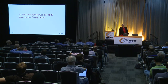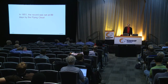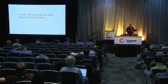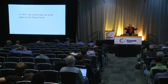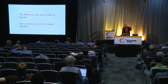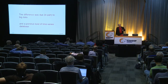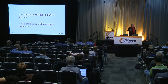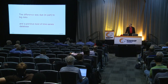In 1850, the record was set at 89 and a half days by the ship called the Flying Cloud — from 130 days to 89 and a half in just a few years. Ship technology had not changed. The way they made rope, sails, or pulled on ropes had not changed. The difference was big data. That's what cut the record from 130 to 89 days. It was a primitive kind of time series database, a primitive recommendation engine.